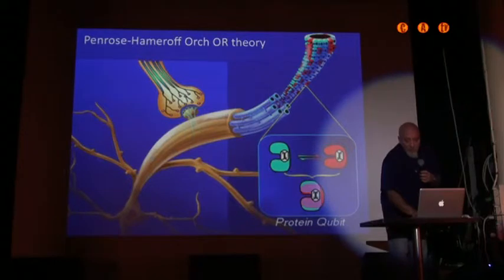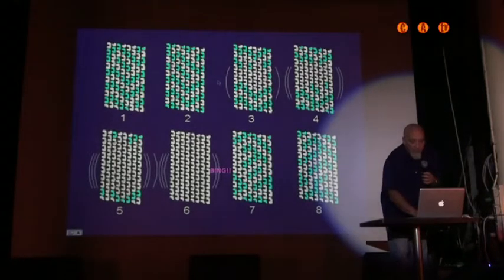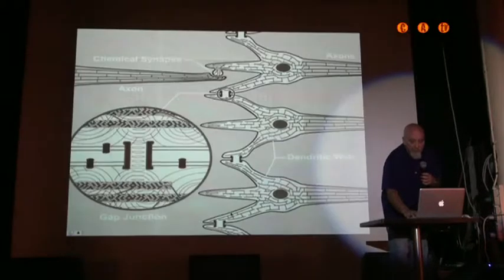So the basic idea is that in a microtubule inside a neuron, each protein can be a qubit, a quantum bit. And so the gray ones would be quantum, and you reach a threshold, there's objective reduction, a moment of bing right there.